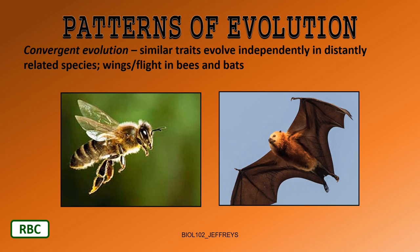We have a couple of different patterns of evolution. Convergent evolution is where similar traits evolve independently in distantly related species. Here we see wings and the ability to fly in bees and bats — an insect and a mammal, very different organisms not closely related at all. Yet both wings and the ability to fly evolved in both of them. That's convergent evolution: similar phenotypes or similar abilities evolving from very different organisms to a common point. Bees and bats have converged to both acquire wings and the ability to fly.